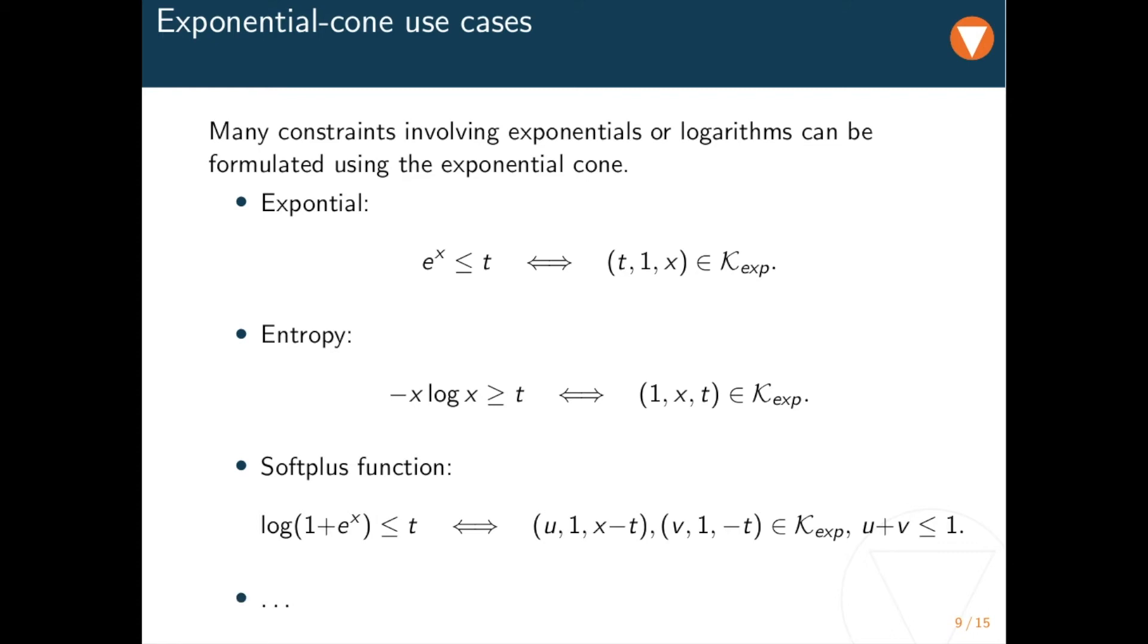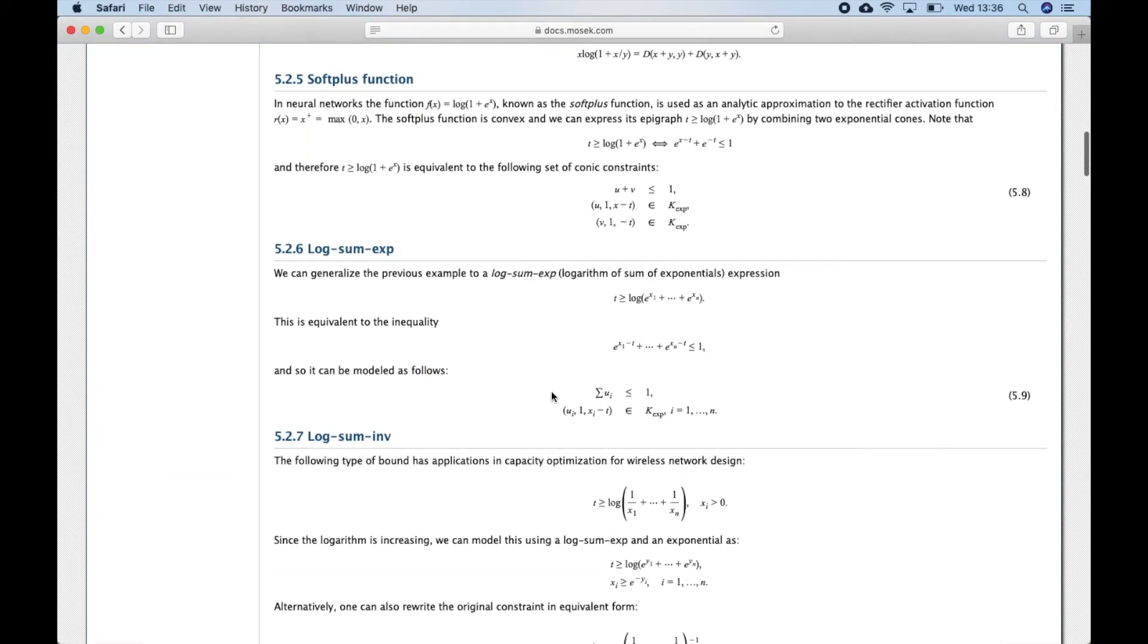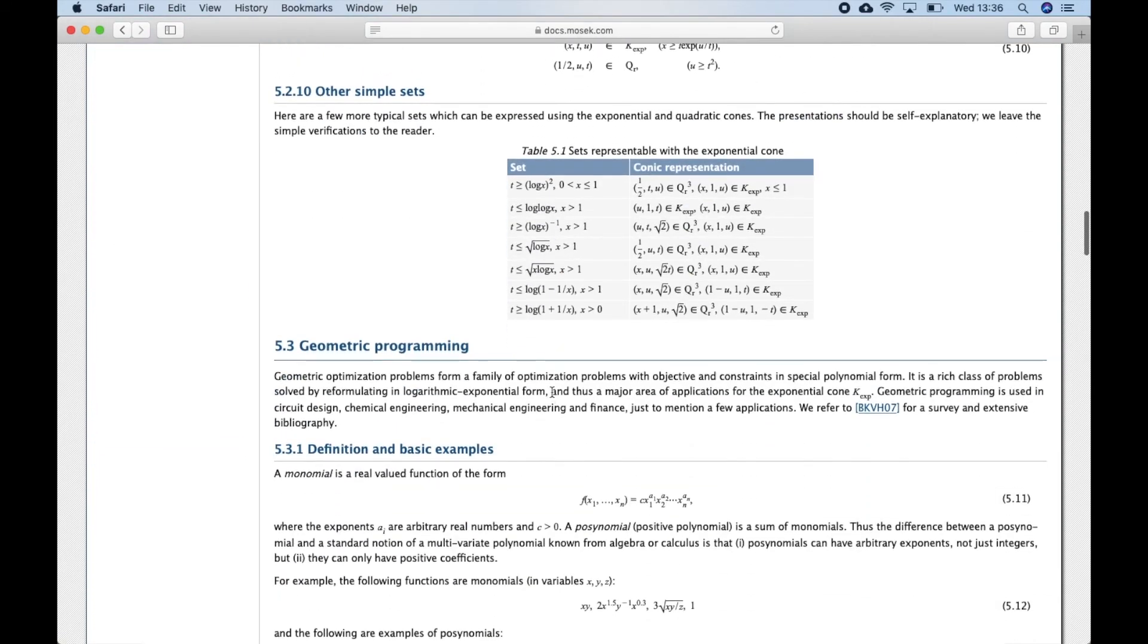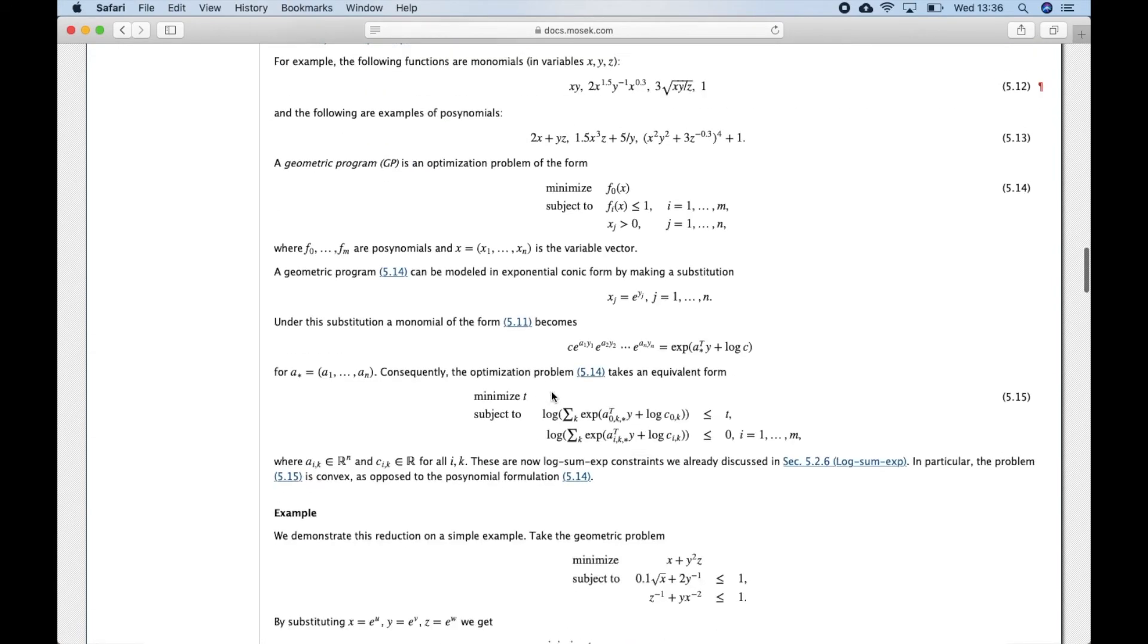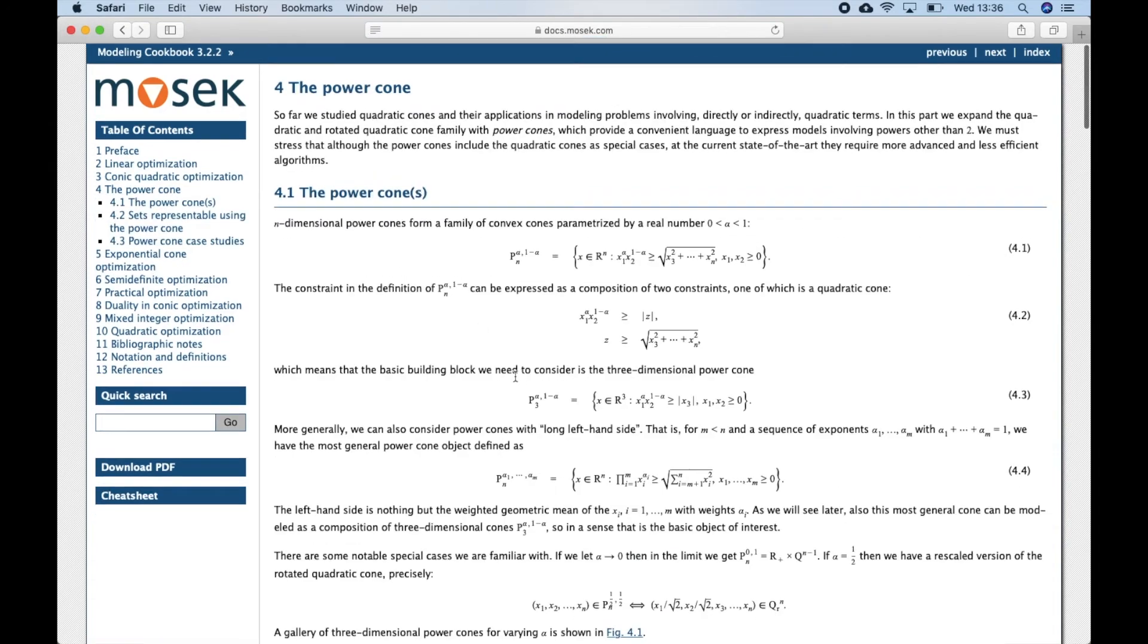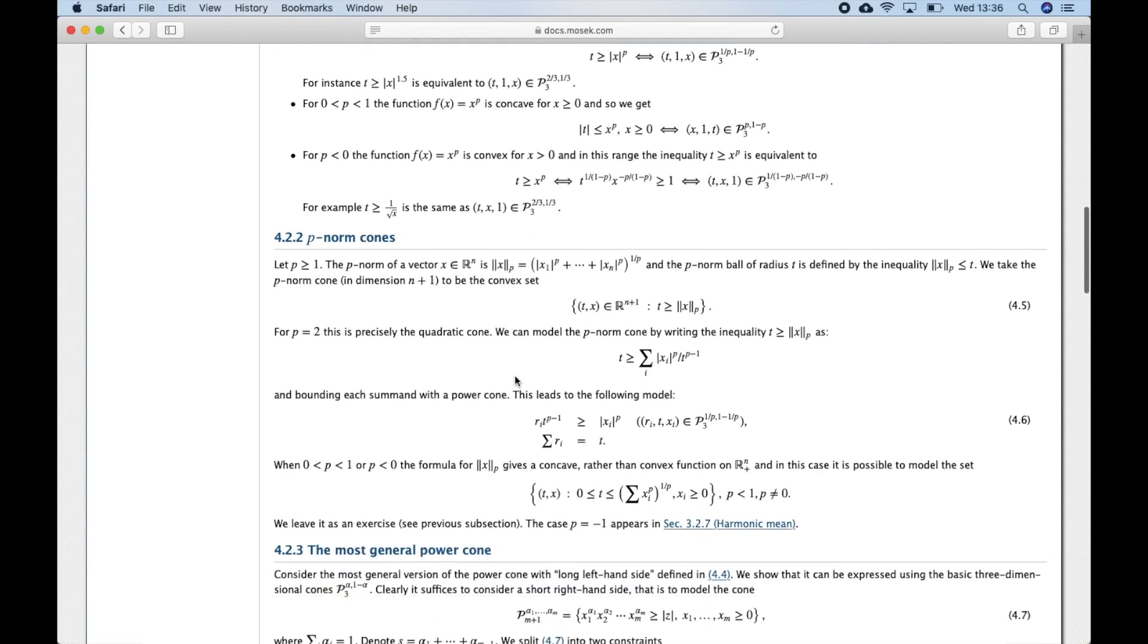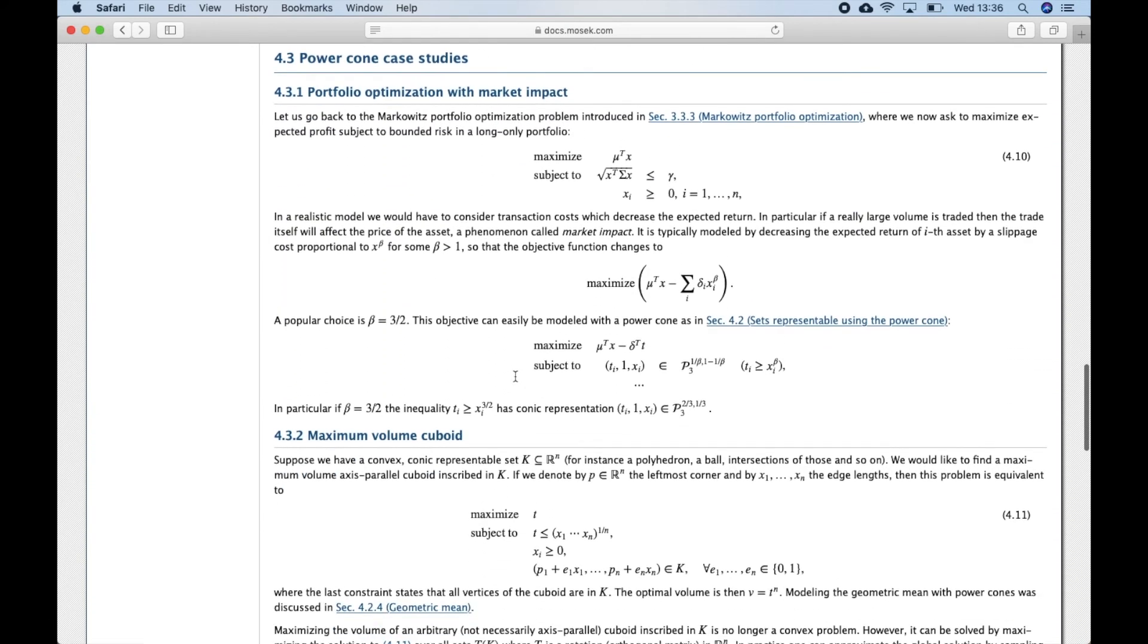While for quadratic cones we have seen several cases where conic modeling is rather direct, most applications of the exponential cone require a minimal amount of actual reformulation. There are many more examples and case studies, and again we refer to the modeling cookbook. Section 5 is devoted to the exponential cone, there is also a whole subsection on geometric programming, that represents a big area of applications for the exponential cone. There is of course also a section on the power cone family, namely section 4. Power cones are most commonly seen for modeling convex powers other than 2, and for representing p-norms.